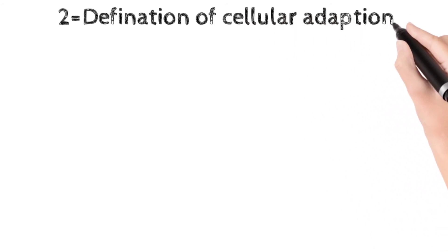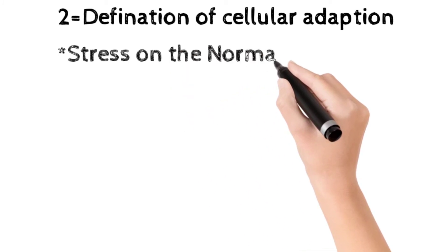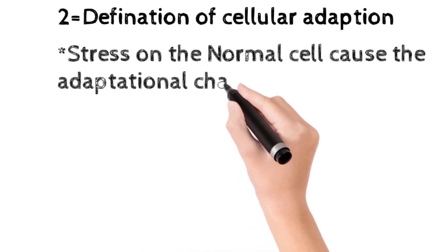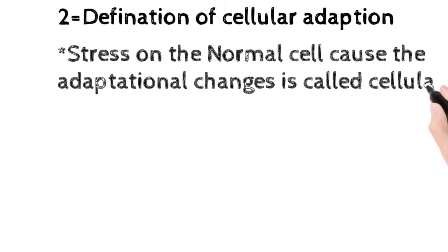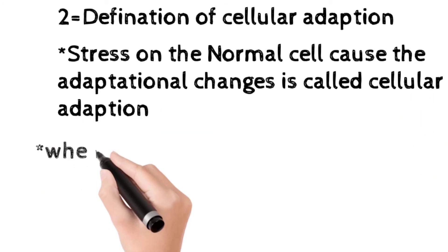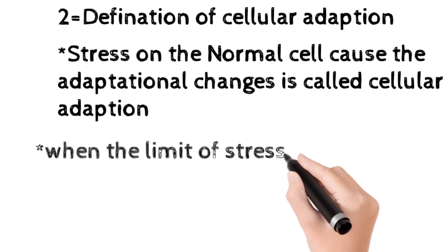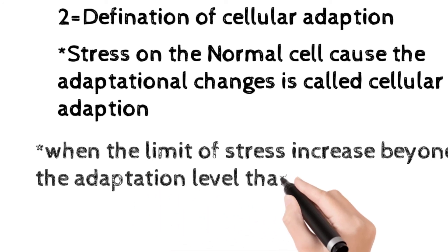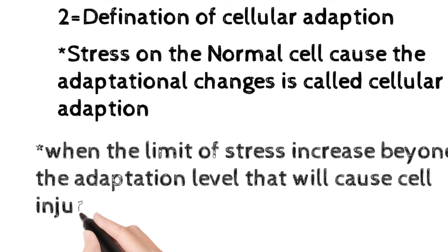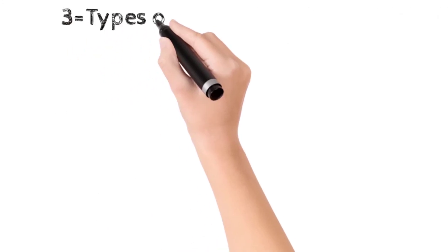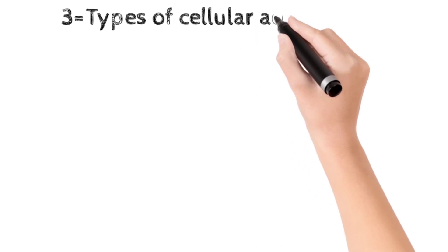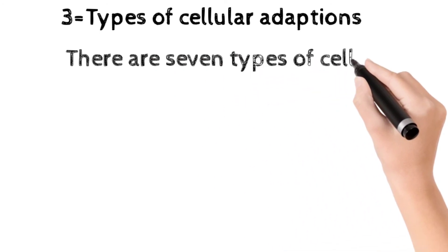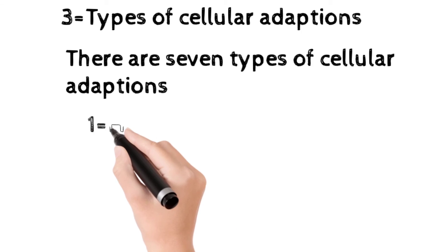Now come to the definition of cellular adaptation. When stress is applied on a normal cell, it causes the cell to bring changes to accommodate that stress — this is known as adaptation. When the limit of stress increases beyond the adaptation level, it will cause cell injury, which may be reversible or irreversible.